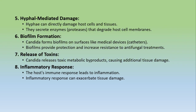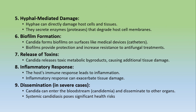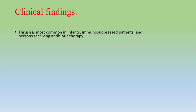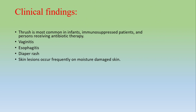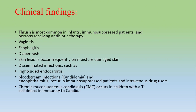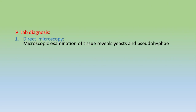The inflammatory host immune response can further exacerbate tissue damage. In more severe cases, dissemination occurs — Candida enters the blood (candidemia) and spreads to different organs, causing serious health risks. Clinical findings: thrush is most common in infants, immunosuppressed patients, and those receiving antibiotic therapy. Vaginitis, esophagitis, and diaper rash occur frequently on moist or damaged skin. Disseminated infections cause right-sided endocarditis and bloodstream infections (candidemia) in immunosuppressed patients and intravenous drug users. Chronic mucocutaneous candidiasis occurs in children with a T-cell defect in immunity.